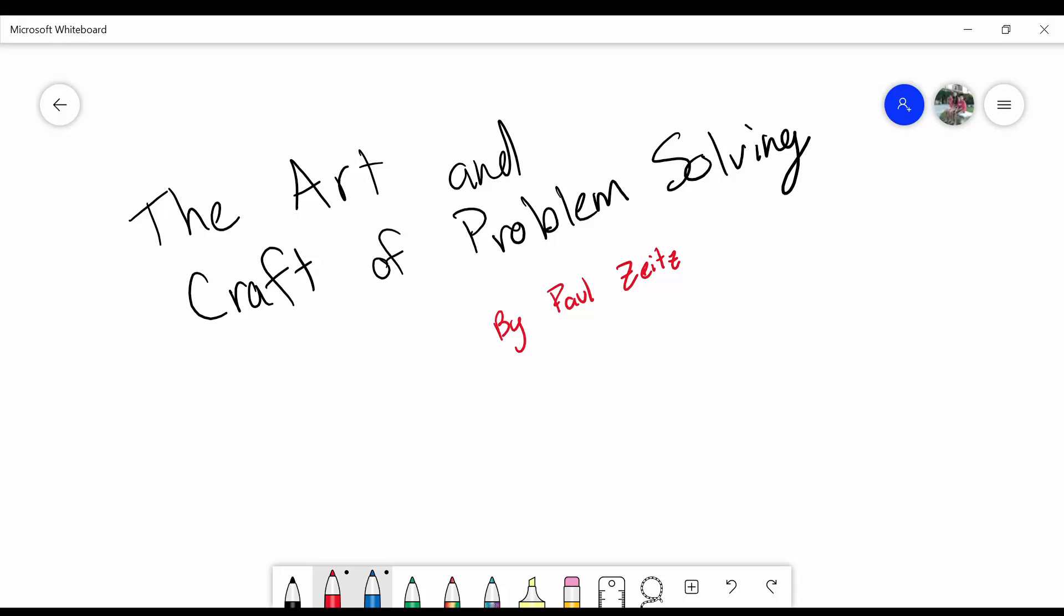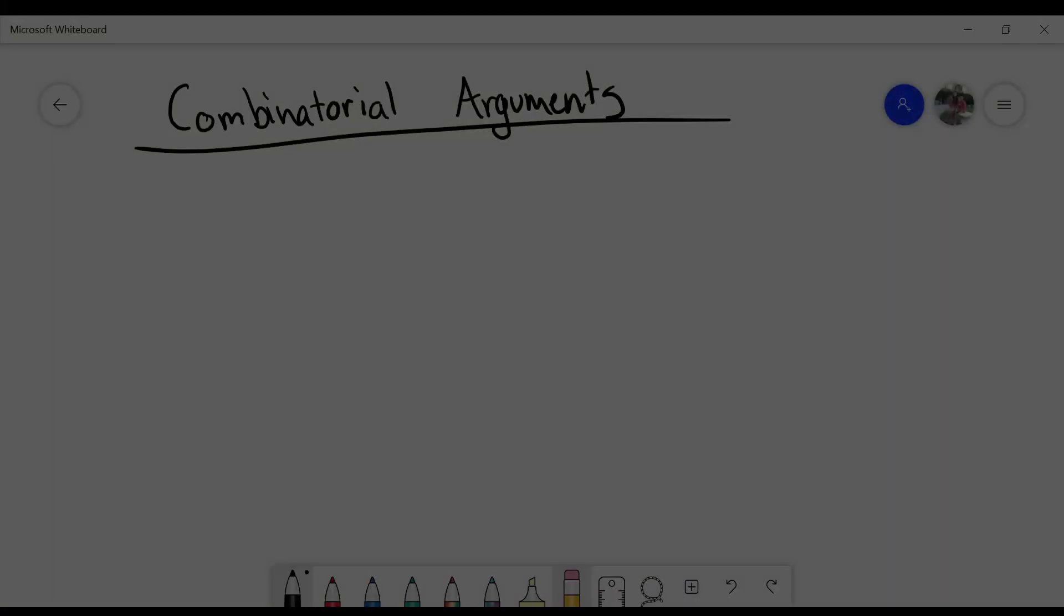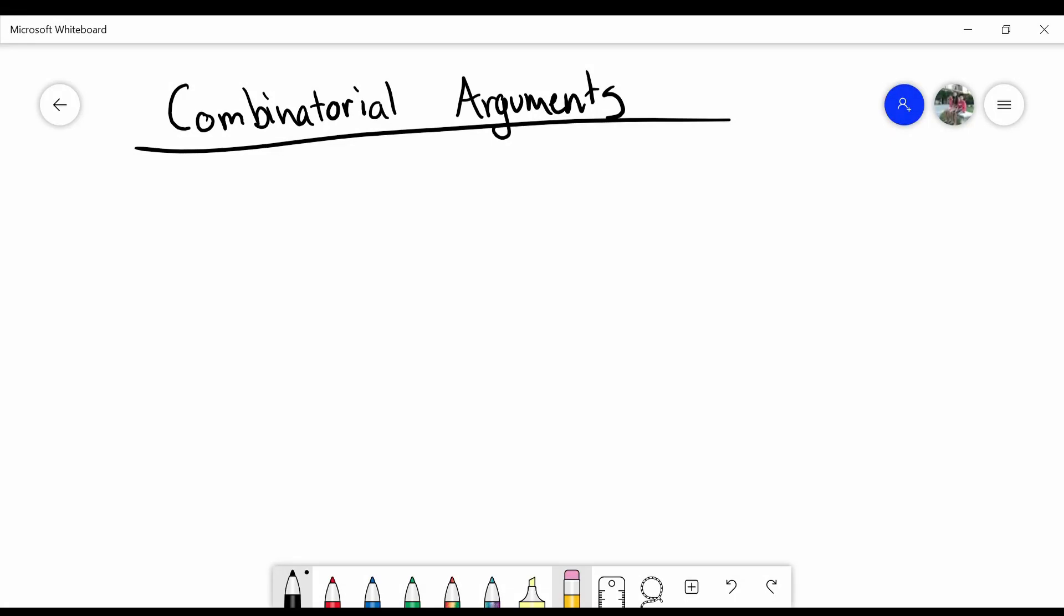A huge shoutout to The Art and Craft of Problem Solving from Paul Zeitz, which showed me this really cool trick. Alright, let's get the video started. Combinatorial arguments. Sometimes we don't need to bash out formulas with algebra to find out if they're true, but rather take them in a new flexible perspective through combinatorics and find a more elegant solution.